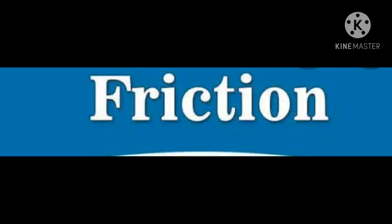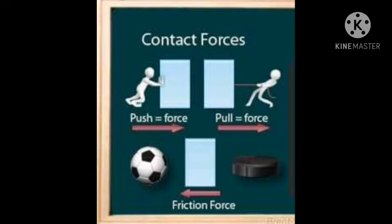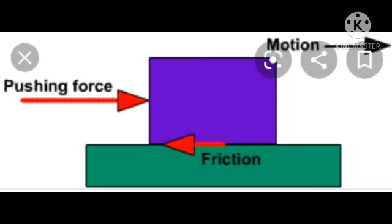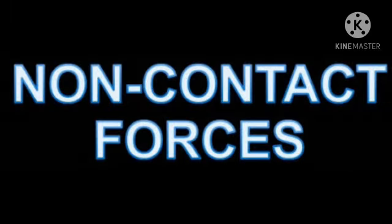The next contact force is friction. Friction is a contact force that occurs between two objects when there is a push or pull on one of them that could make it move over the surface of the other. Friction acts to oppose the motion. For example, a striker on a carom board slows down due to friction between the surface of the board and the bottom of the striker.